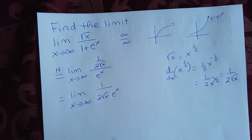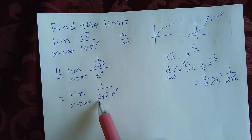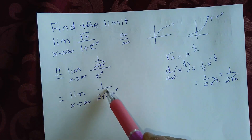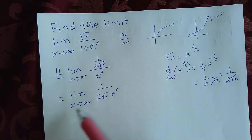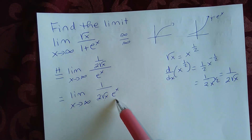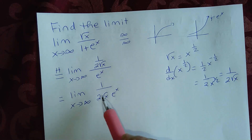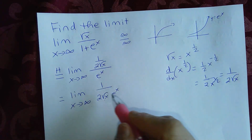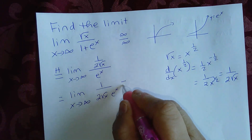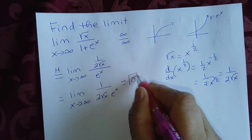We have one divided by two square root of x times e to the x. We already know square root of x approaches infinity as x approaches infinity, and so does e to the x. So the limit of one over two square root of x times e to the x is equal to zero.